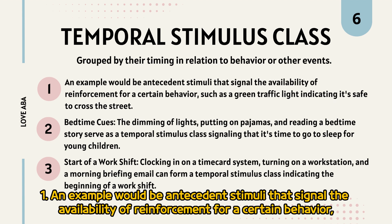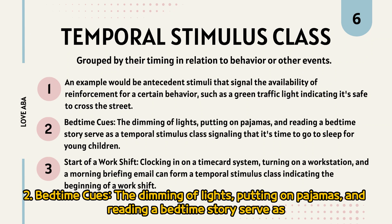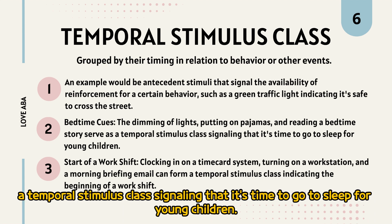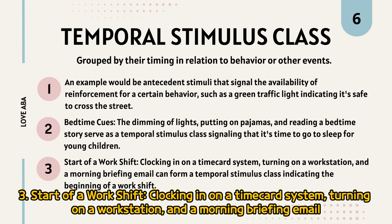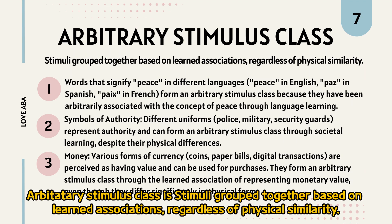A temporal stimulus class is grouped by timing in relation to behavior or other events. For example: antecedent stimuli that signal the availability of reinforcement, such as a green traffic light indicating it's safe to cross. Bedtime cues — dimming of lights, putting on pajamas, and reading a bedtime story — signal that it's time to sleep. The start of a work shift — clocking in, turning on a workstation, and a morning briefing email — indicate the beginning of a work shift.